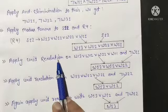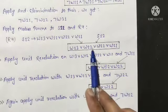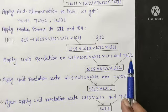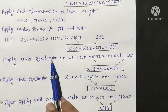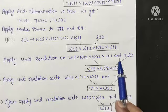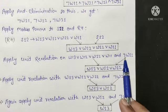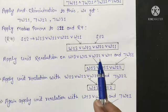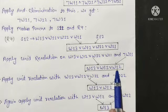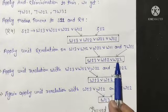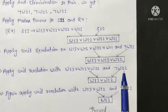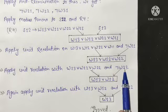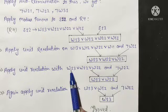Applying unit resolution with this expression and negation of W11 — meaning there is no Wumpus in room 1,1 — according to the resolution principle, W11 and negation of W11 cancel out and we get the result. Again, applying unit resolution with negation of W22 — meaning no Wumpus in room 2,2 — W22 and negation of W22 cancel out. Then applying unit resolution with negation of W12 — no Wumpus in room 1,2 — W12 and negation of W12 cancel out, leaving W13.